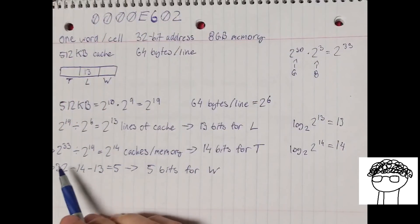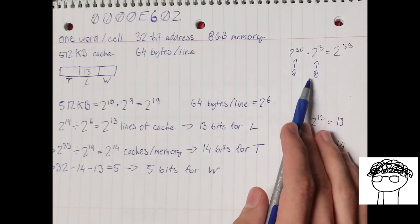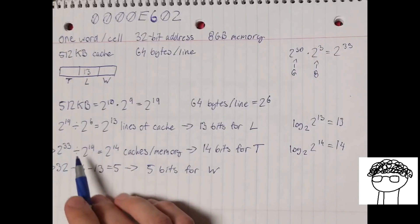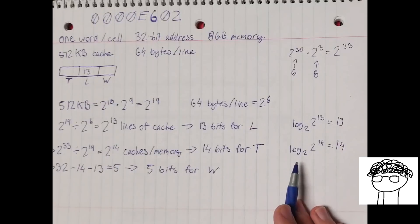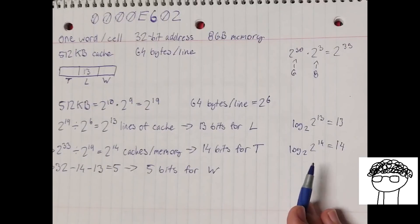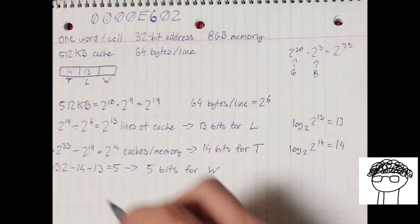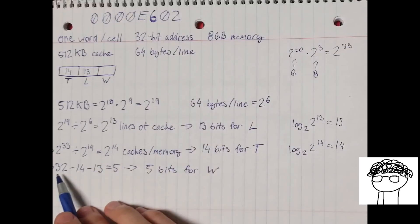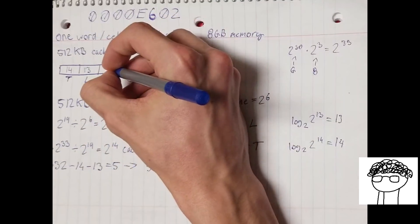I can then do the same for my main memory. I know I have 8 gigabytes, so that's 2 to the 30 for a G, times 2 to the 3 for 8, gives me 2 to the 33 bytes of main memory. Divide that by the cache size, which is 2 to the 19, and I get 2 to the 14, and that's how many times bigger our memory is than our cache. I can do the same operation with log base 2 and get 14, which tells me that 14 bits are for the tag portion of our 32-bit address. Since I know it's a 32-bit address, I can then take 32 and subtract the 14 for the tag and the 13 for the line, which gives me 5 bits left for the word.